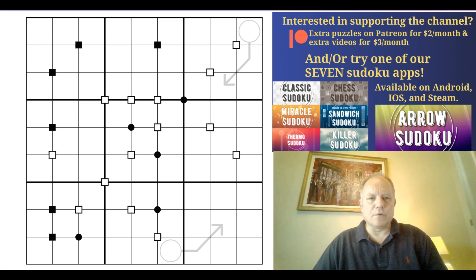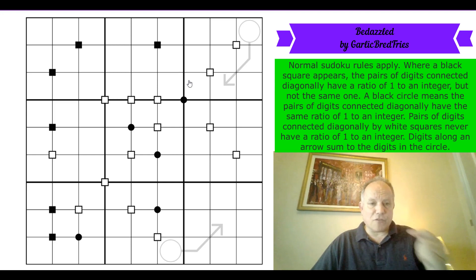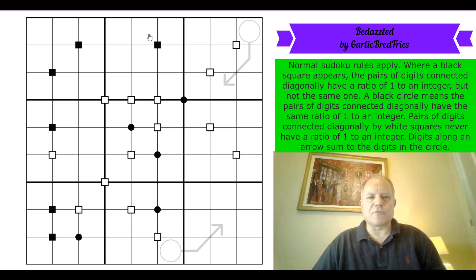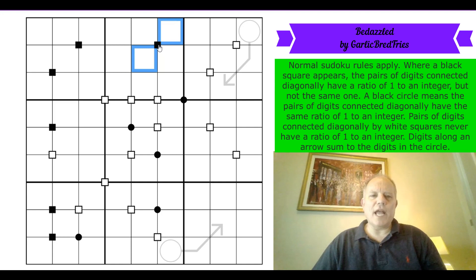You see a number of types of symbol in the grid — basically three of them: black squares, black circles, and white squares. All of these refer to the pairs of diagonally connected digits on them. The black squares say that the pairs of digits both have a one-to-an-integer relationship, and they are different for the two pairs.